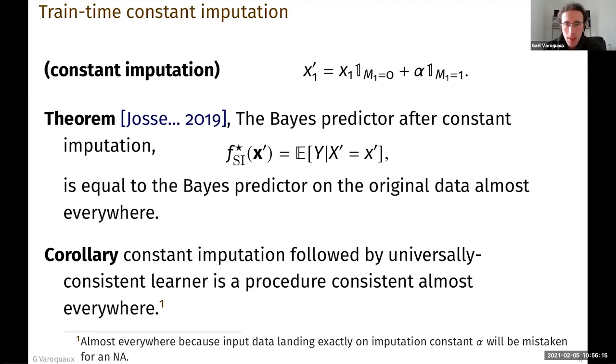As a consequence, I can have a procedure that does constant imputation here, followed by a learner that is consistent on my data, so a universally consistent learner. This will give me a predictor that is consistent almost everywhere. And now the almost everywhere is a technical detail, but the reason is that I can have collision. And if in my data, I have a feature vector that collides with my imputation, then I will not be consistent here.